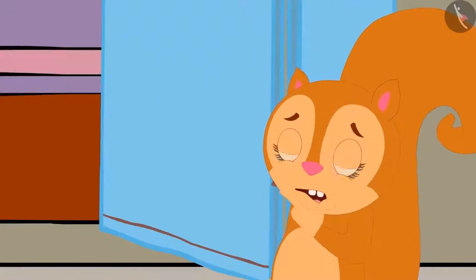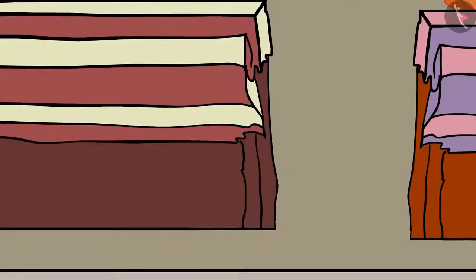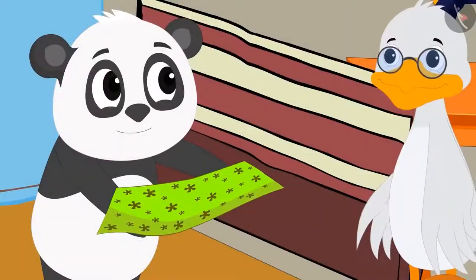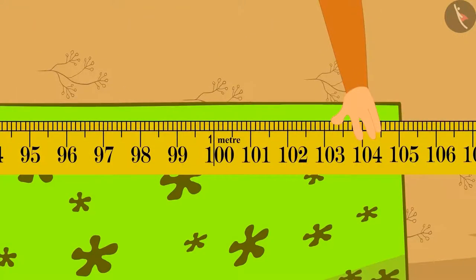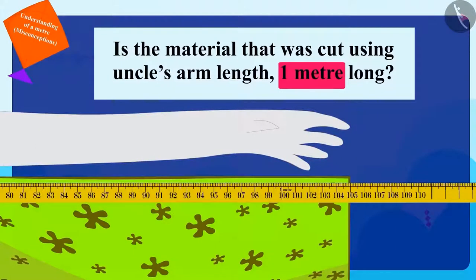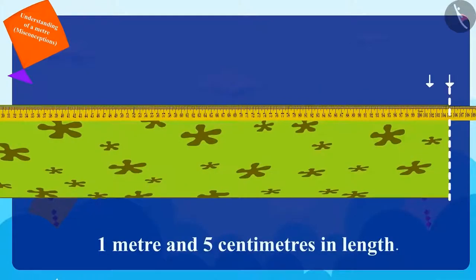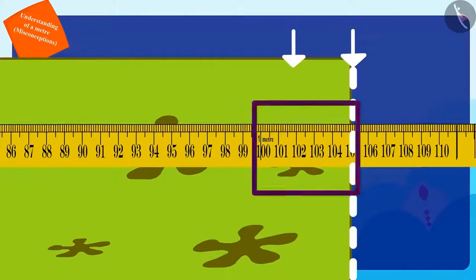Chanda was surprised. She had got her measuring tape along, and as soon as uncle cut Golu's material, she took it and immediately measured it. Is the material that was cut using uncle's arm length one meter long? No — uncle gave one arm long material, which turned out to be one meter and five centimeters long.